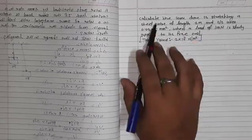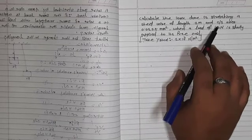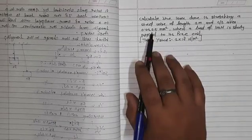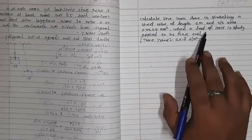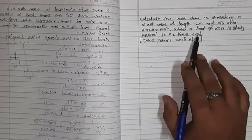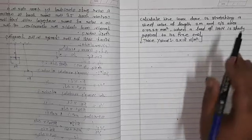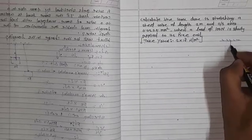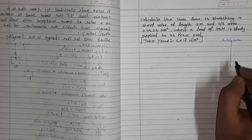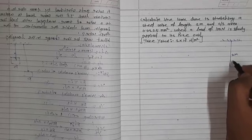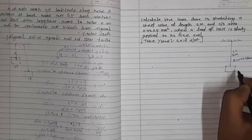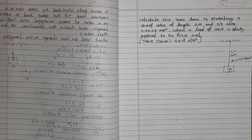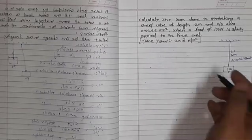Calculate the work done in stretching a steel wire of length 2 meter and cross sectional area 0.0225 mm square when a load of 100 newton is slowly applied to its free end. Young's modulus Y is given as 2 into 10 to the power 11 newton per meter square.